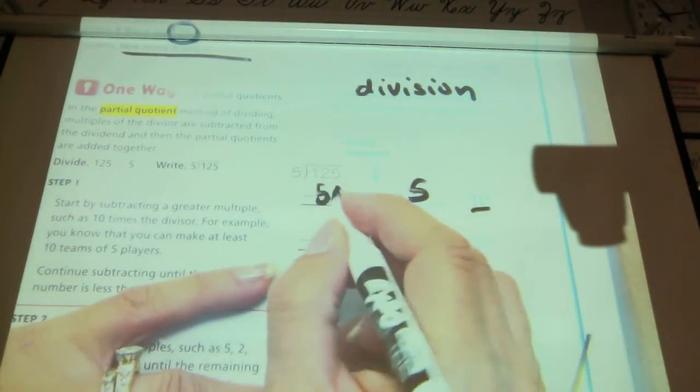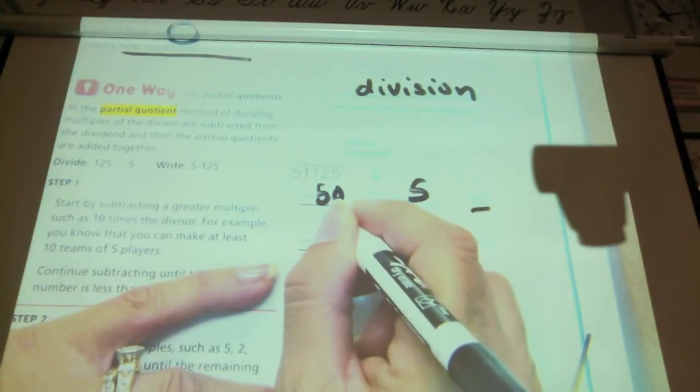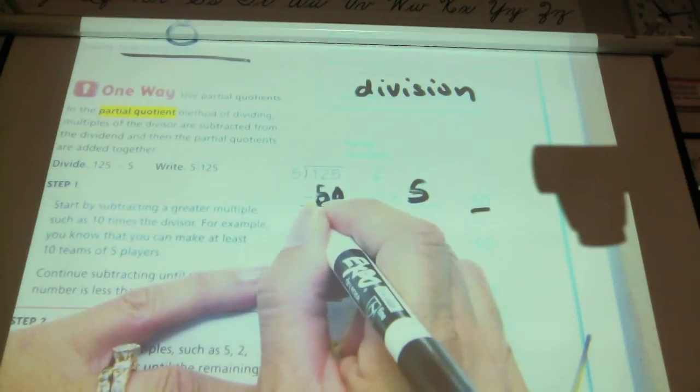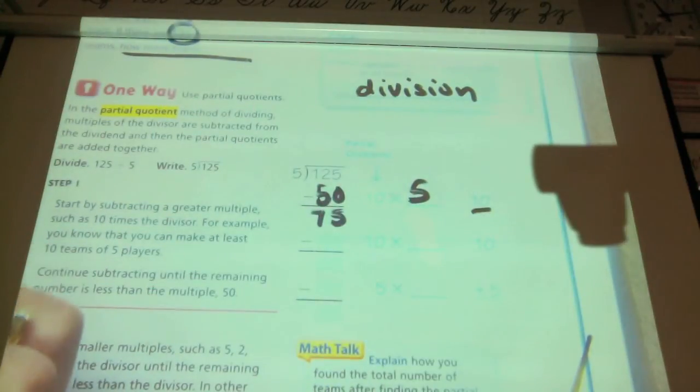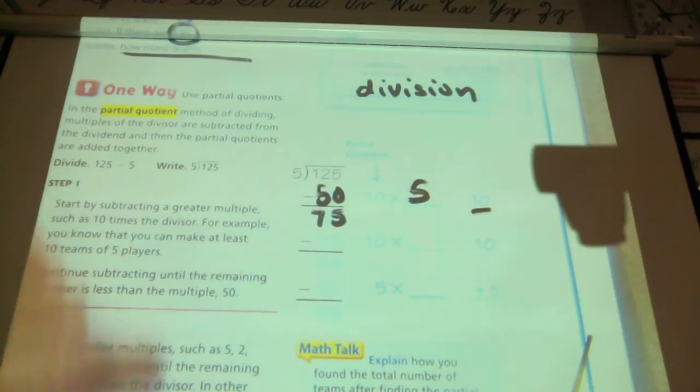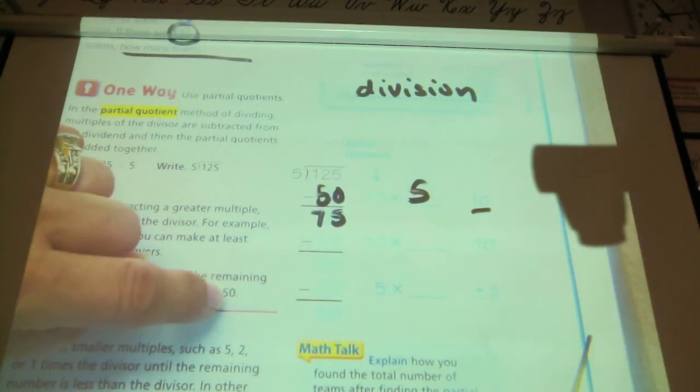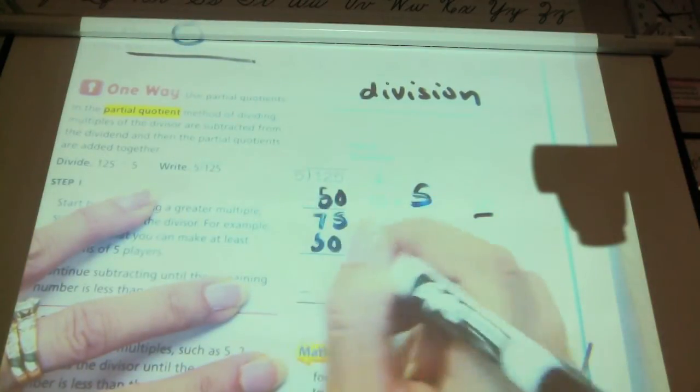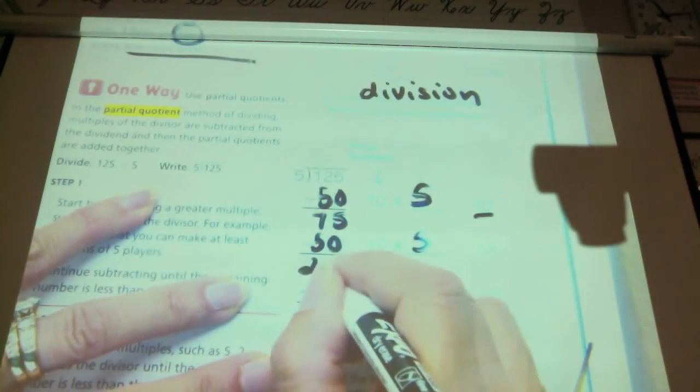And what is 125 minus 50? I can do 5 minus 0 is 5 and 12 minus 5 is 7. Can I do 50 again? Can I take 50 from that again? So I'm going to do it again. 10 times 5 again is 50 again. And I'm going to subtract and I end up with 25.